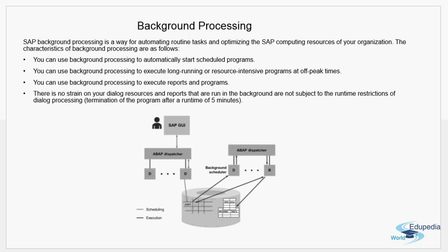Background processing exists to handle periodic tasks and to optimize computing resources. Background work processes automatically start scheduled jobs — for example, a job that runs every Monday or every day at 5 PM. You can also use background processing to execute long-running or resource-intensive programs at off-peak times. There is no strain on dialogue resources, and background work processes are not subject to the runtime restrictions of dialogue processing.